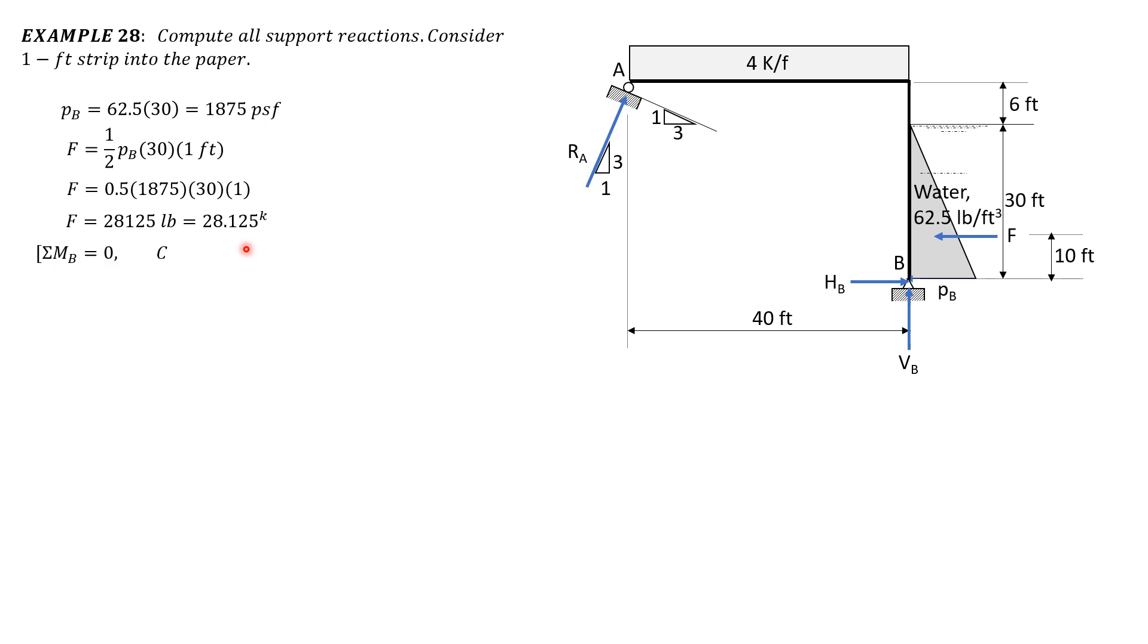Then summation moment about B equals 0. Take note there are two component reactions of this normal reaction at A. Both are clockwise. So RA times, let's start with a vertical component, 3 over square root of 10, moment arm is 40. Plus RA times horizontal component 1 over square root of 10, moment arm is 36.